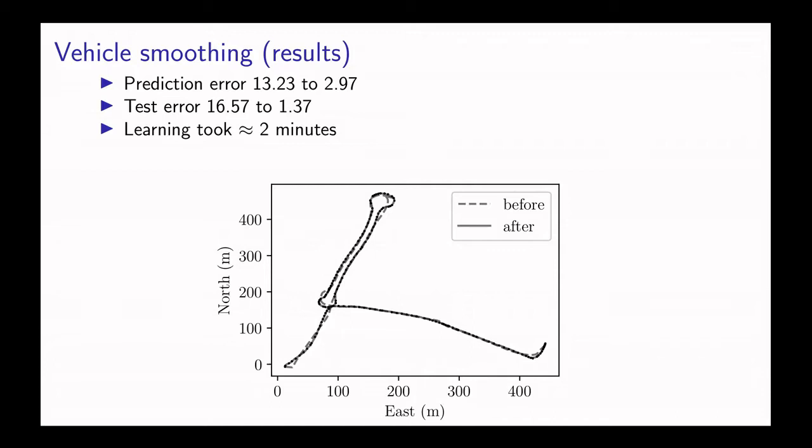The results are that we were able to reduce the prediction error from 13 all the way down to 3, so by a lot. We were able to reduce the test error from 16 all the way down to 1.3, so by an order of magnitude.